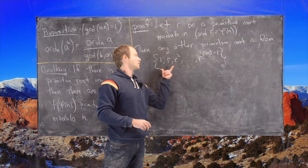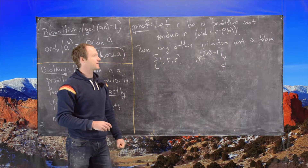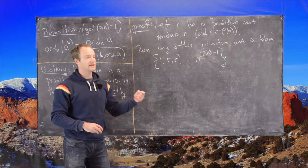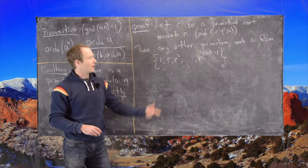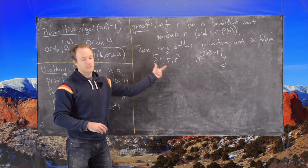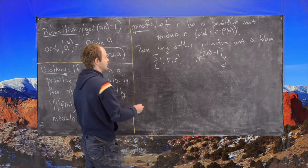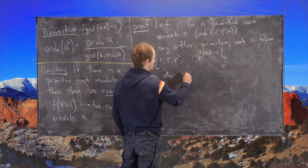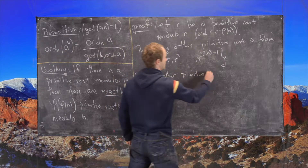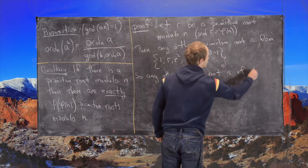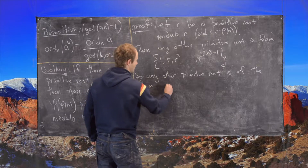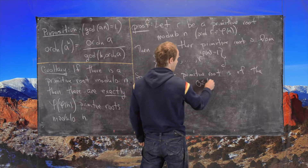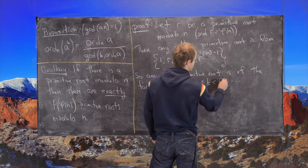This set represents every unique residue that is relatively prime to n. So any other primitive root is of the form r^k with 0 ≤ k < φ(n). Note we exclude k = 0 since that gives 1, which is obviously not a primitive root.